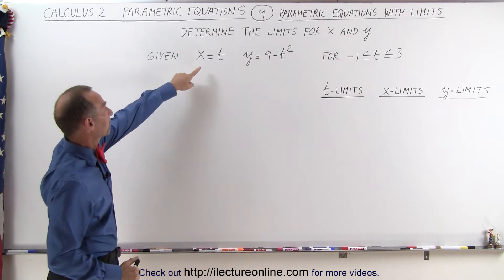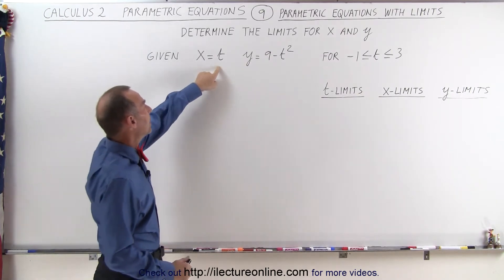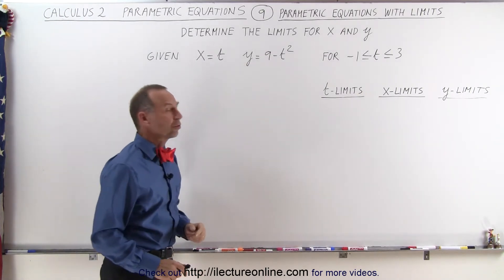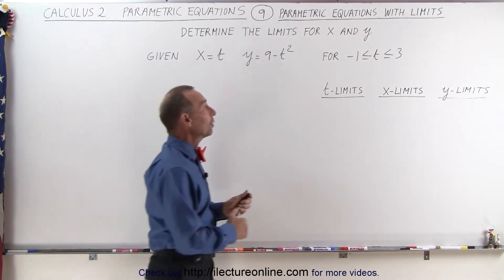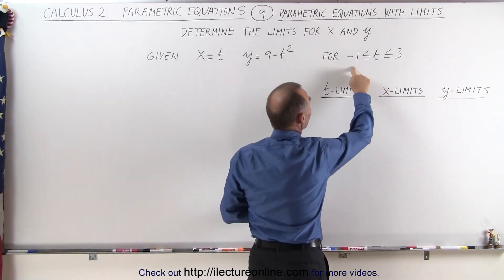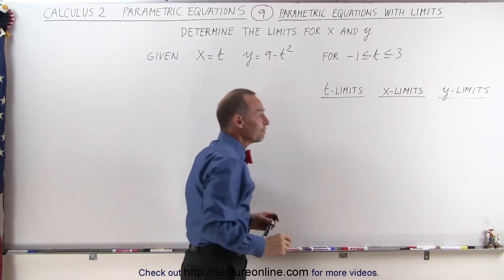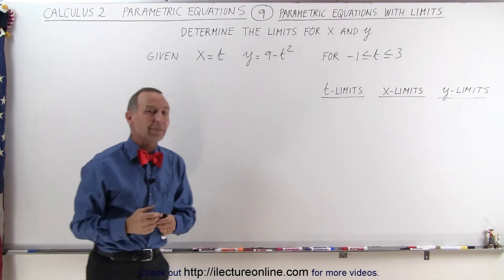Let's say we have the two parametric equations where x equals t and y equals 9 minus t squared. And the limits are given to us in terms of t from minus 1 to positive 3. So what are the x and the y limits in that case?